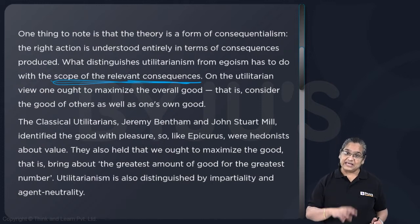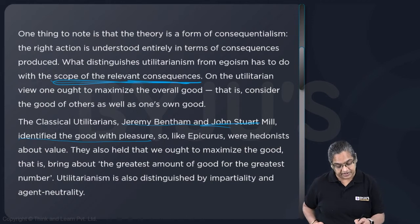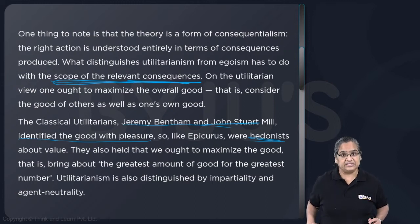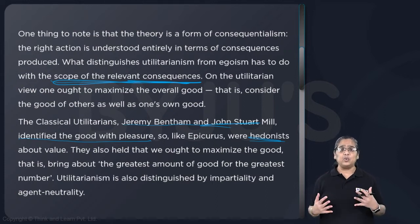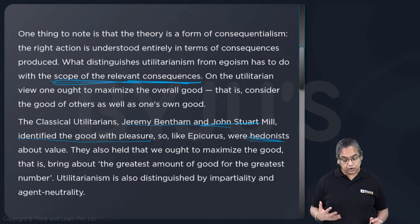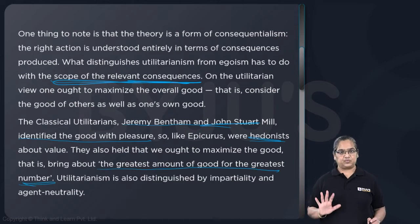Now we go on to the utilitarians — people who propagated this theory. The classical utilitarians, Jeremy Bentham and John Stuart Mill, identified the good with pleasure, and so, like Epicurus, were hedonists. A hedonist is one who believes that the purpose of life is the pursuit of pleasure. They also held that we ought to maximize the good — bring about the greatest amount of good for the greatest number of people.